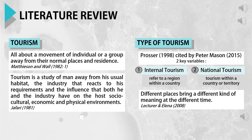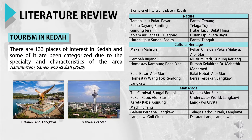According to Madison and Wall 1982, tourism is all about a movement of individual or a group away from their normal places and residents. Quasal 1998, cited by Peter Madsen 2015, has come out with two key variables of tourism. The first one is internal tourism, referring to a region within a country, and the second is national tourism, which is within a country or territory. Meanwhile, other researchers mentioned that types of tourism keep on changing by time and situation, and different places bring a different kind of meaning at different times.